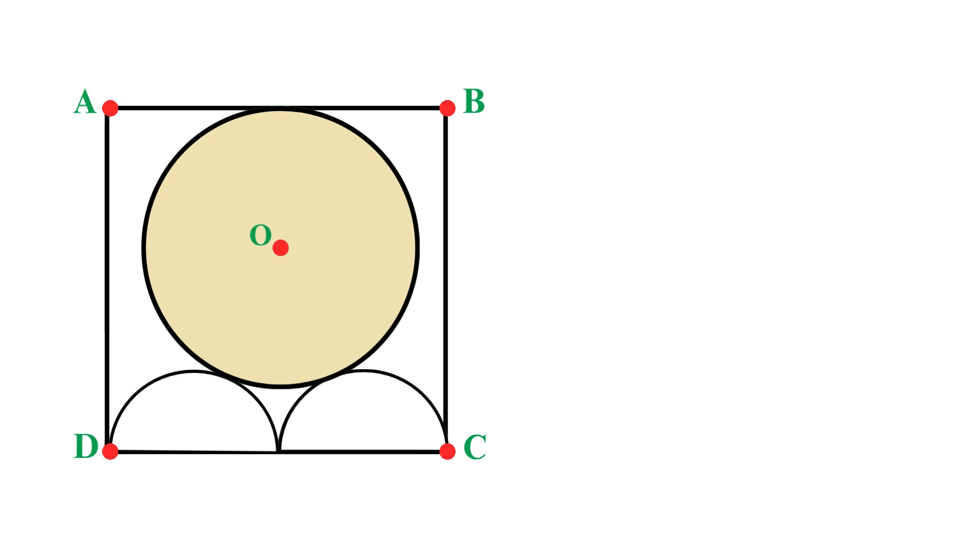Now, we are given that this square has a side length of 20 units, which means the bottom side CD also measures 20 units. Let's examine the two semicircles on the bottom side of the square. Since both semicircles are identical, and their diameters together span the entire bottom side of length 20, so we can determine each semicircle's dimensions. Each semicircle's diameter equals 20 divided by 2, which gives us 10 units.